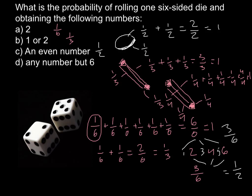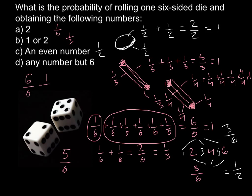The last question D: any number but six. We can solve it in two ways — we can just add probabilities for five sides, and what we'll get would be five over six. Or we can subtract the probability to land on side number six from the total: six over six minus one over six equals five over six. So the correct answer here is five over six.